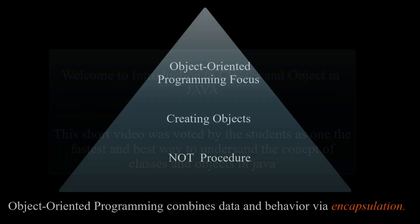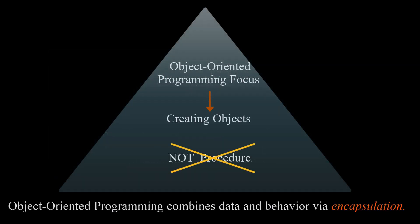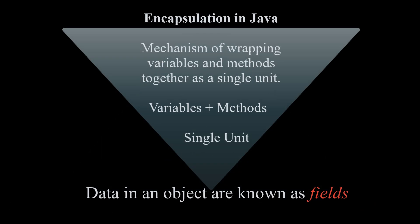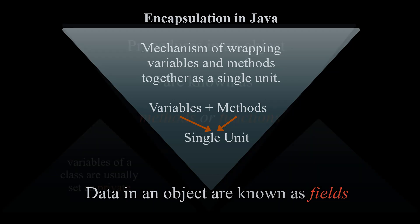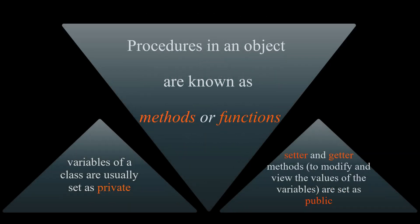Object-oriented programming is centered on creating objects rather than procedures. It combines data and behavior via encapsulation. Encapsulation in Java is a mechanism of wrapping variables and methods together as a single unit. Data in an object are known as fields, and procedures in an object are known as methods or functions.